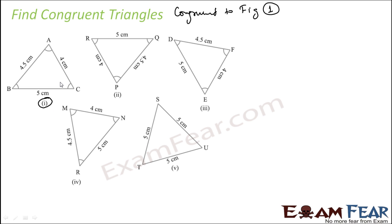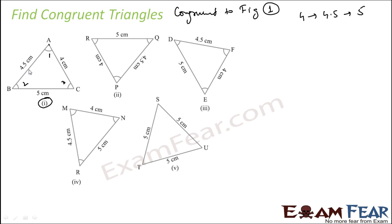We have to find a triangle where the sides are of the form 4, 4.5, and 5 in this order. Everything is increasing: 4, 4.5, and 5. So if we can find a series like this, that means the triangle is congruent. I'll try with all the series.